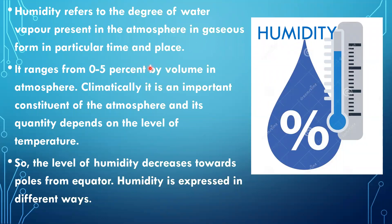Now let us see what is humidity. Humidity refers to the degree of water vapor present in the atmosphere in gaseous form at a particular time and place. It ranges from 0 to 5% by volume in the atmosphere. The level of humidity decreases towards the poles from the equator. You can compare it to a dry cloth — a dry cloth can absorb more water, but a wet cloth cannot. Similarly, when the atmosphere is warm and dry it can absorb more water vapor, but when it is already cool it cannot absorb more.